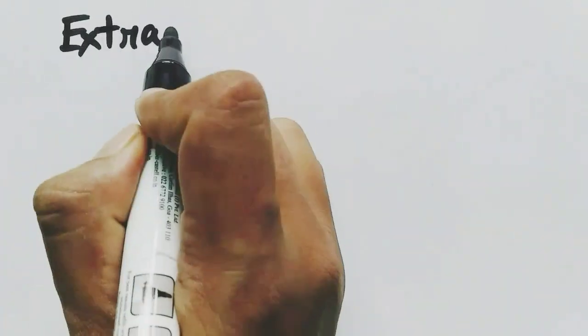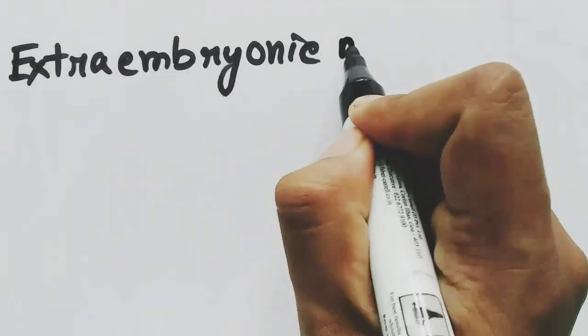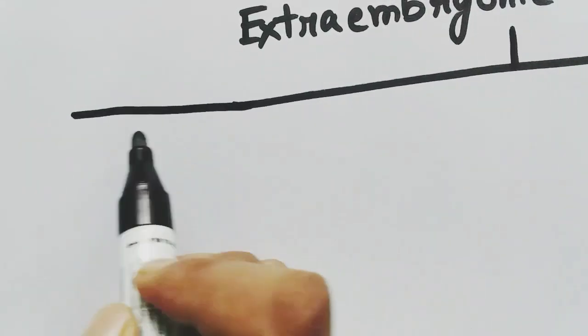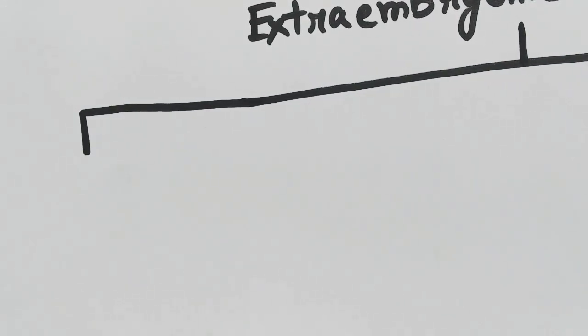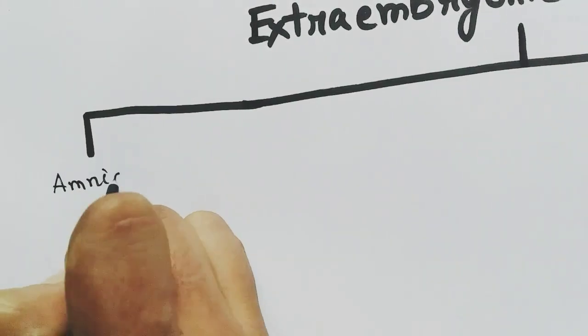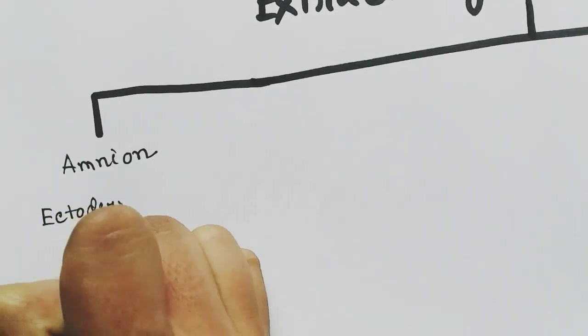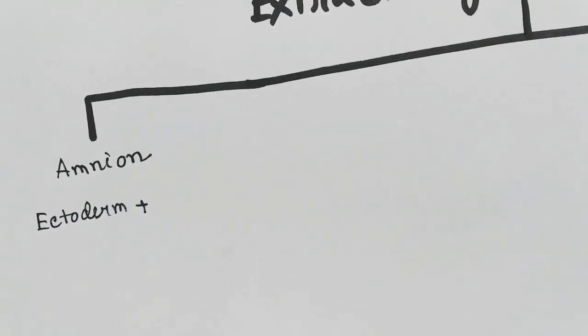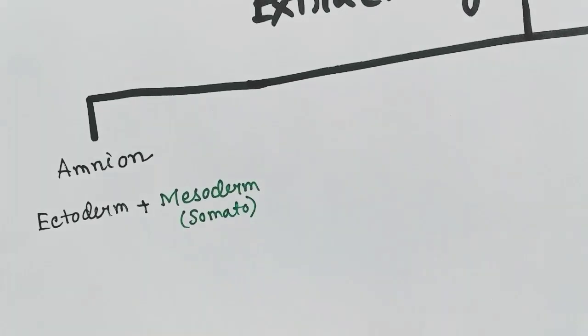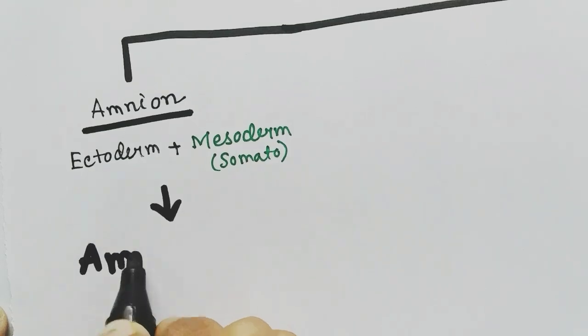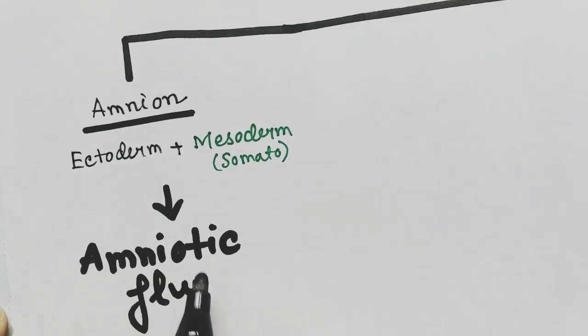Now we will do a recap of the extra-embryonic membranes. First, the amnion: it has two layers — ectoderm and somatopleuric mesoderm. The amnion stores amniotic fluid, which keeps the embryo wet and prevents it from drying out.